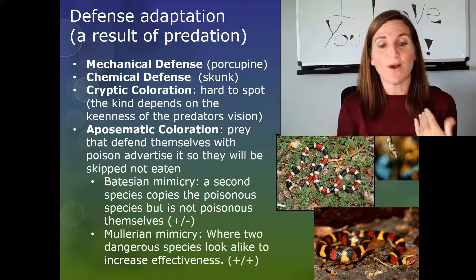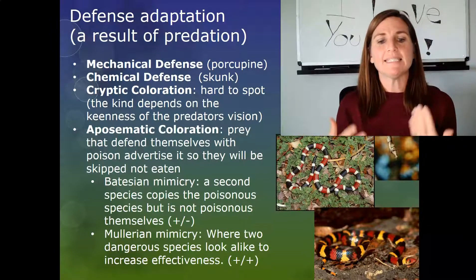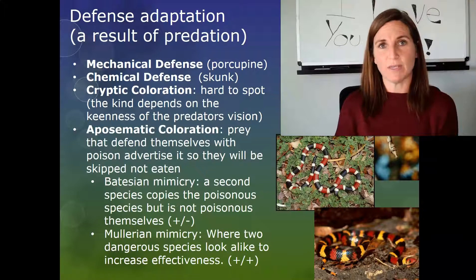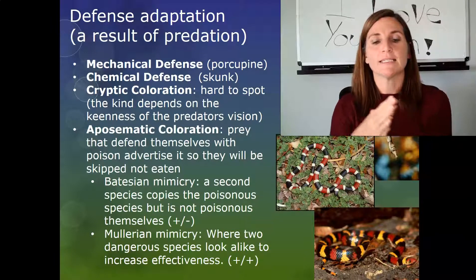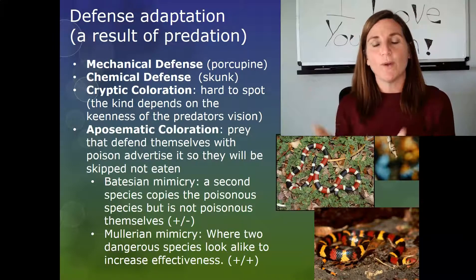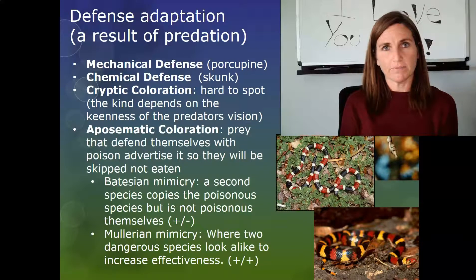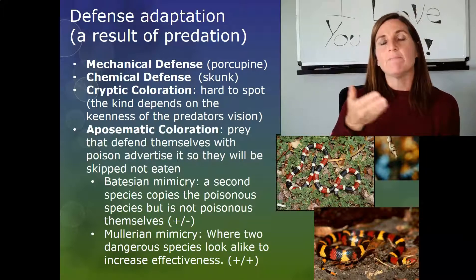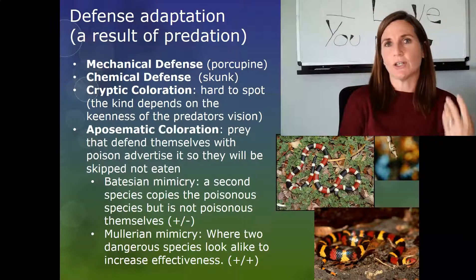That leads to two kinds of mimicry. A mimic is someone who copies another. Batesian mimicry is where a non-poisonous species looks like a poisonous species. This is considered plus-minus: good for the organism that's not poisonous, and bad for the one that is. The way it works: you might have two snakes with similar color patterns, one poisonous and one not. The poisonous one gets diluted because if a bird eats the non-poisonous snake, it doesn't learn to avoid that color pattern.